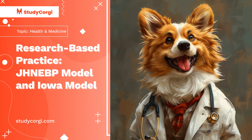According to White and Dudley-Brown, the Johns Hopkins Nursing Evidence-Based Practice (JHNEBP) model is a scientific approach that implies integrating valid theoretical knowledge into working experience. The Iowa Model of Research-Based Practice is based on similar core principles, thus it is aimed at allowing nurses to implement research findings in their everyday practice. Therefore, the key target of both models resides in incorporating the available evidence for the benefit of the quality of evidence-based practice.